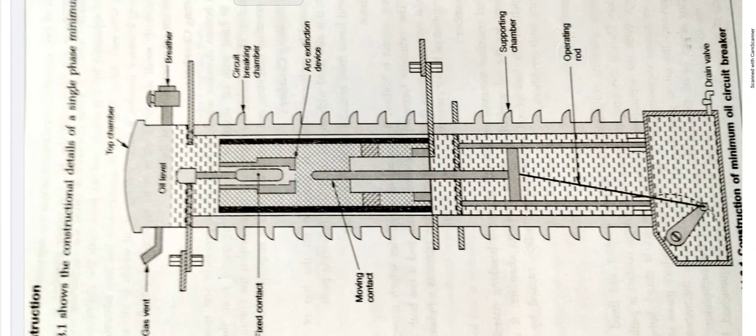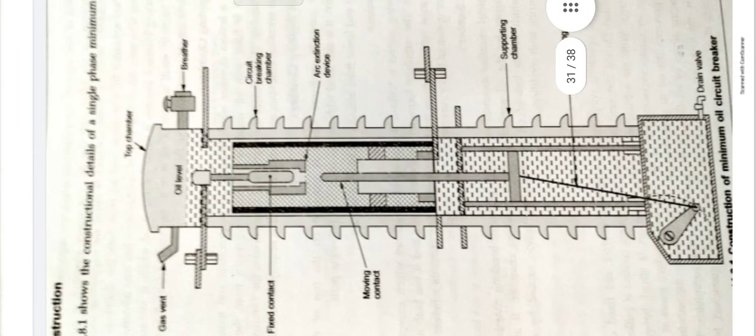Third one is top chamber. It is a metal chamber mounted on the top of circuit breaking chamber. It provides expansion space for the oil present in circuit breaker breaking chamber. It also contains a separator which avoids loss of oil by centrifugal action caused by circuit breaker operation during faulty condition.